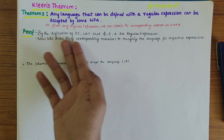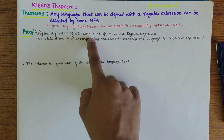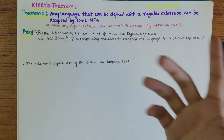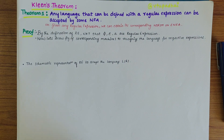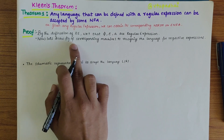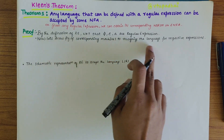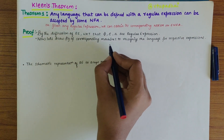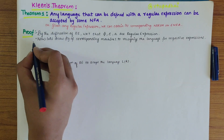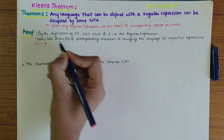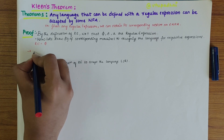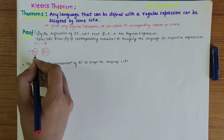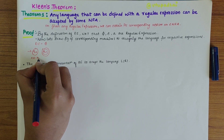By the definition of regular expression, we know that Phi, Epsilon, and 'a' are regular expressions. Let's draw the corresponding machines to recognize the language for each expression. The machine to accept when the regular expression equals Phi has Q0 as the start state and Q1 as the final state, with no transitions happening.